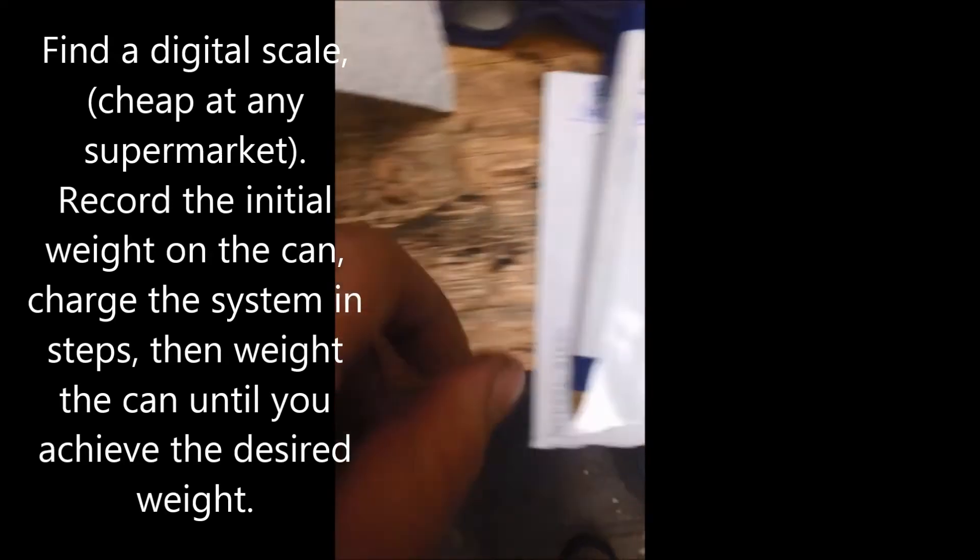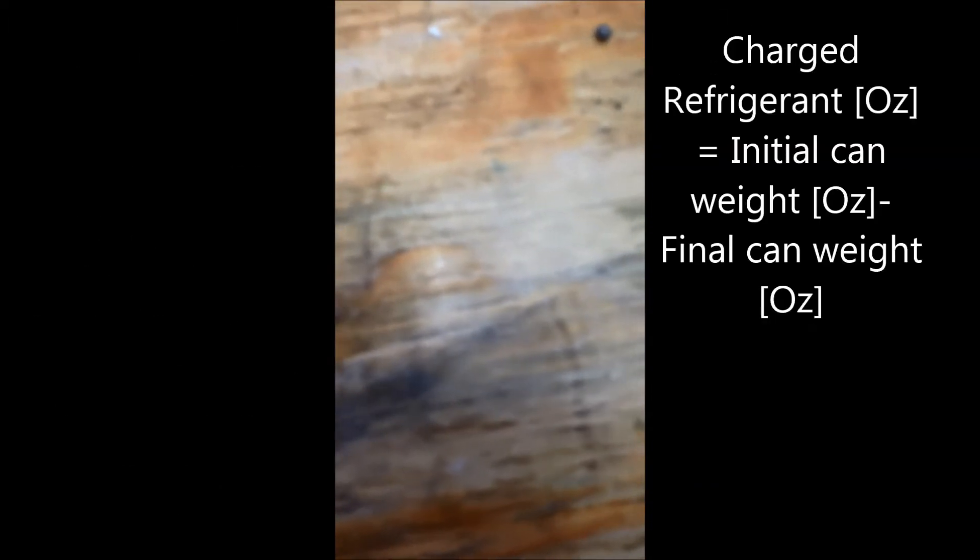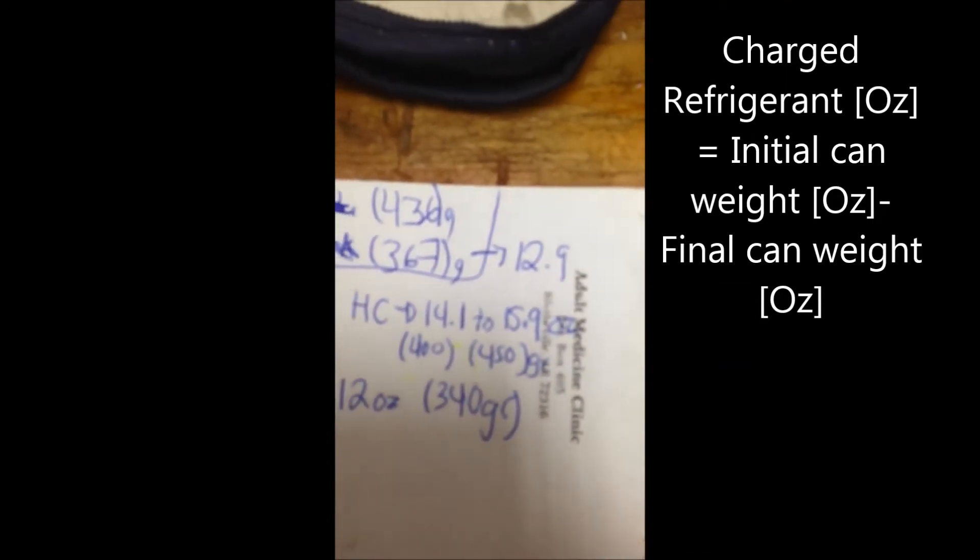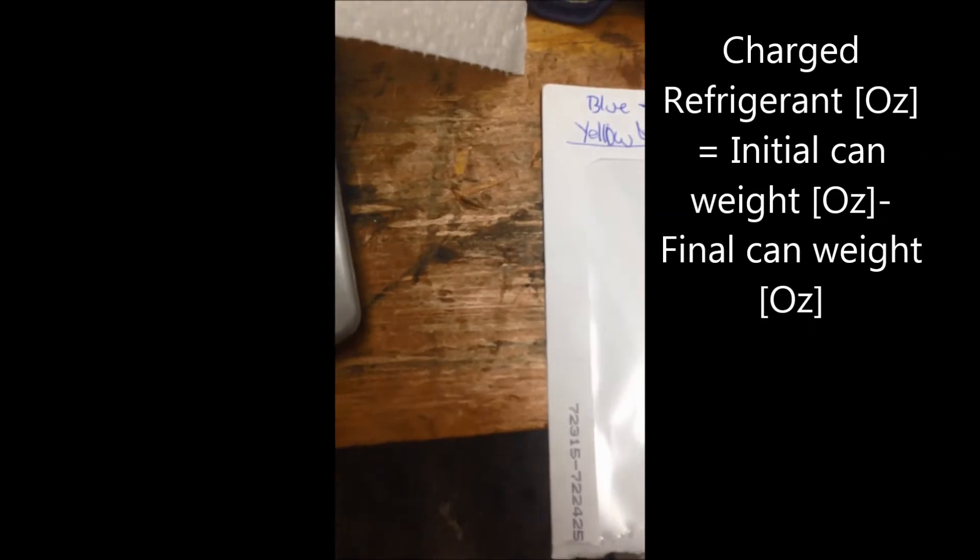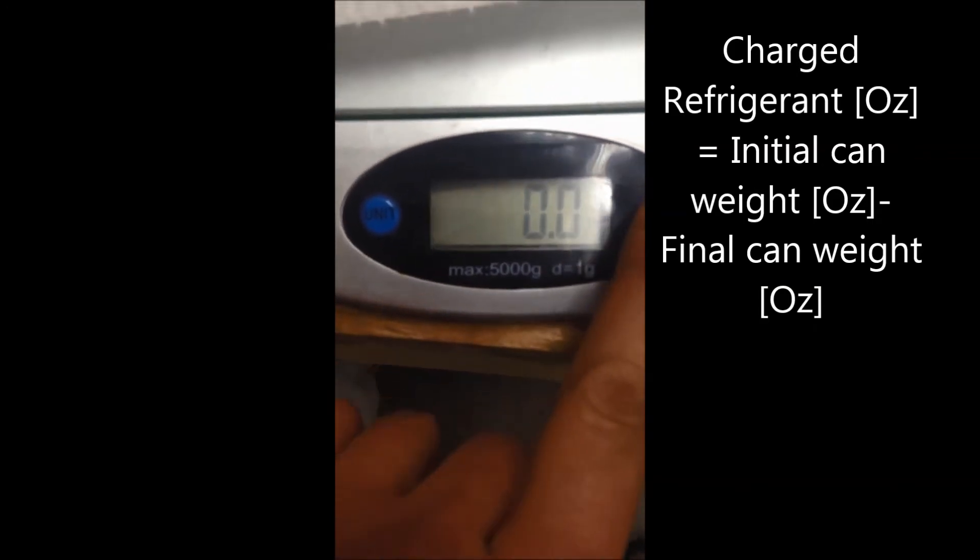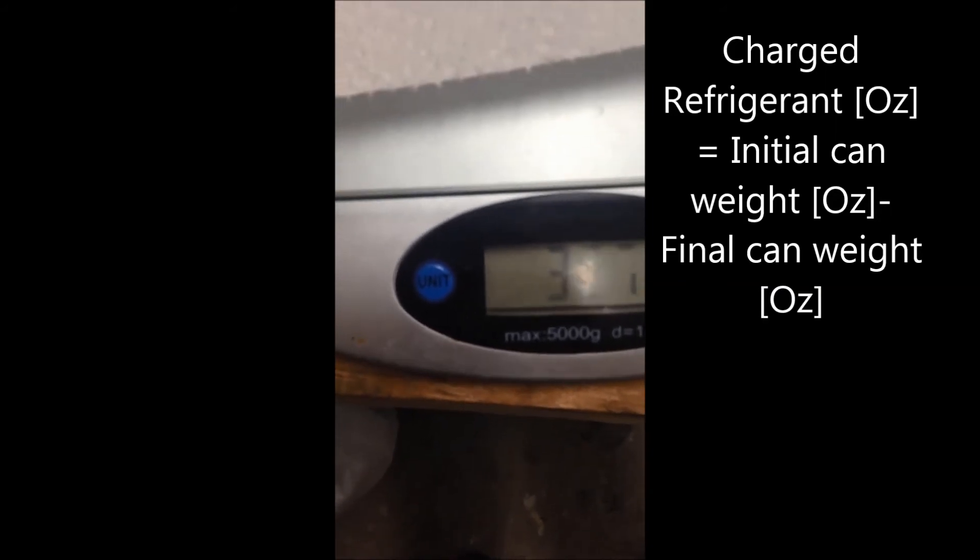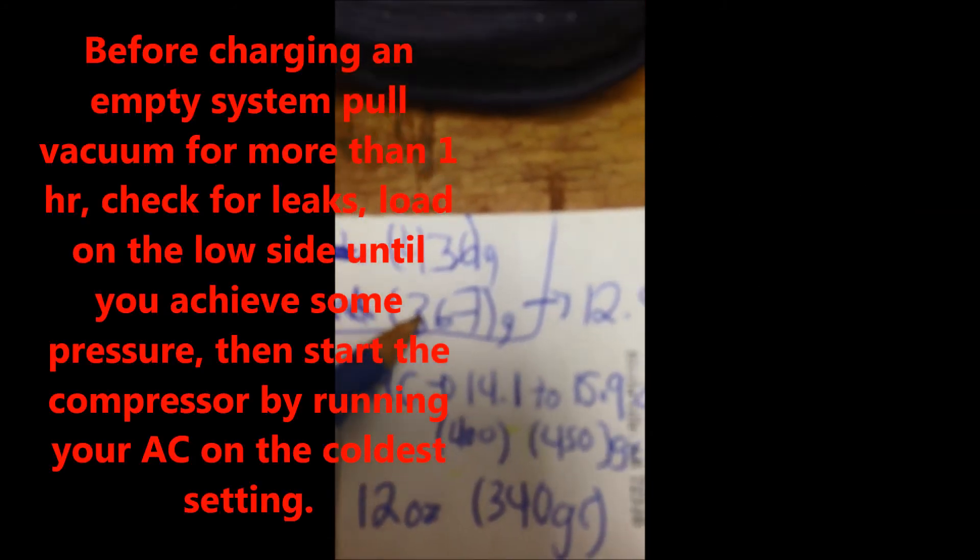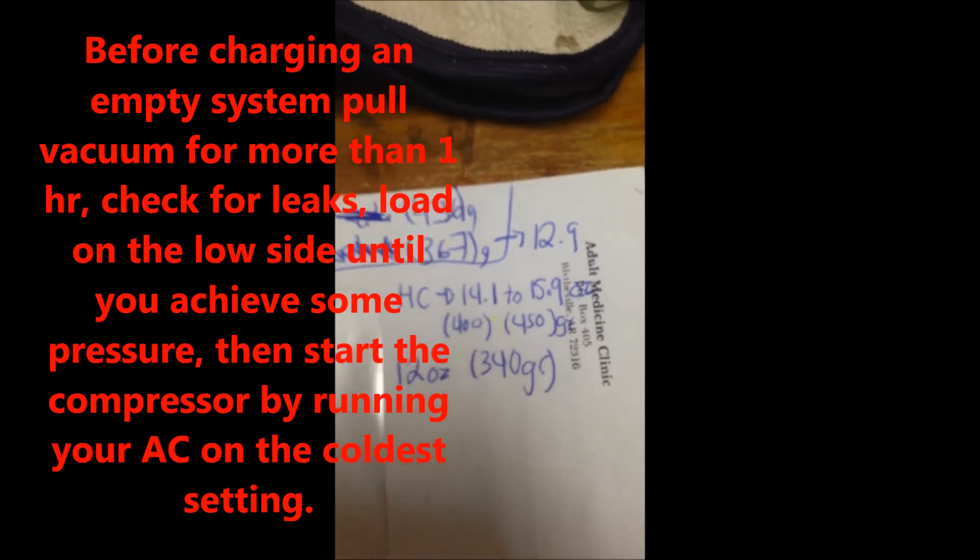That's 10.9 ounces. I'll record it right here. I'll make sure I take out two to three ounces from this can. I'm also going to record the weight in grams - that's 366 grams. It's what I have right here, 367 grams, so I'll make sure that I take it from that can.